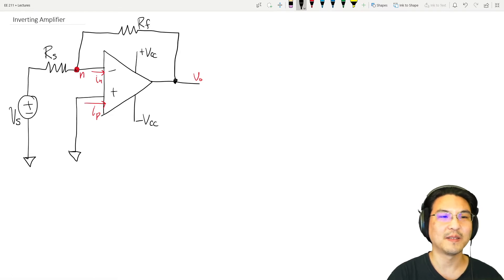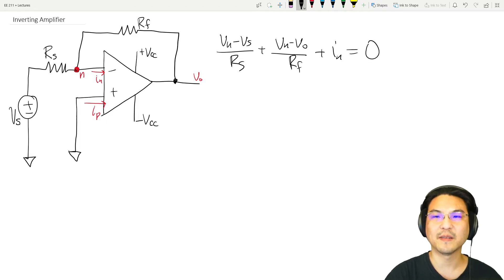Going toward the left: VN minus VS over RS. Now let's go up this way: VN minus VO over the feedback resistor. And then going this way there's current—I drew my arrow going toward the right—so plus IN. There's KCL.